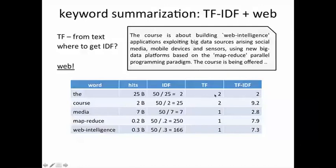Here log of 2 is 1, obviously, so you multiply it by 2 and you get 2. But interestingly, for the others you get slightly surprising but also intuitive results. 'Course' is a much more common word than 'map reduce', but it also occurs twice, so it comes up high in the TF-IDF. So do 'map reduce' and 'web intelligence', even though they occur only once. What taking the log does is it makes sure that you give higher weightage to the term frequency as opposed to this ratio, but this ratio is also taken into account.